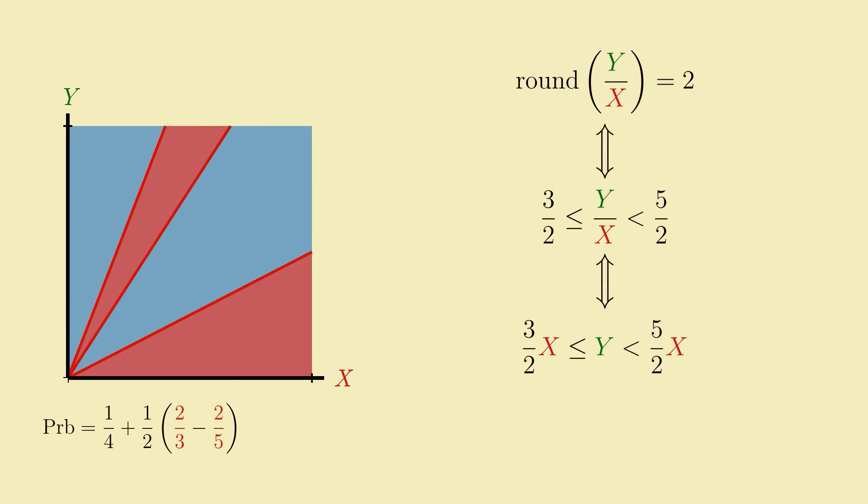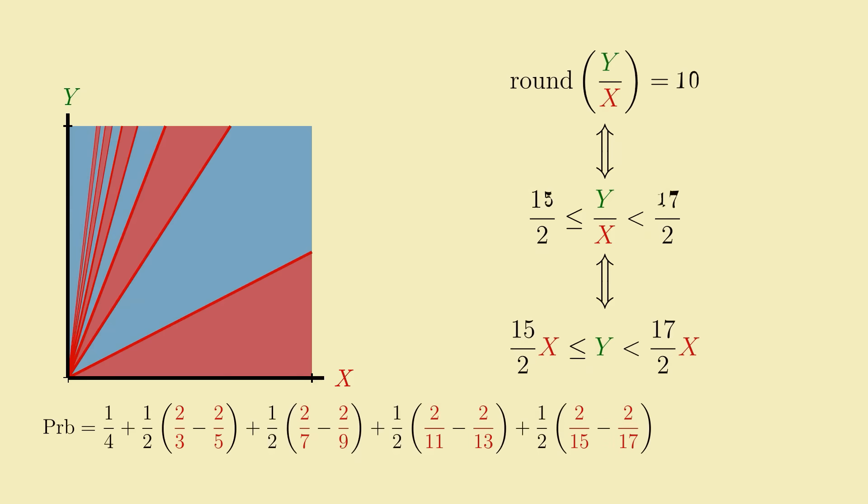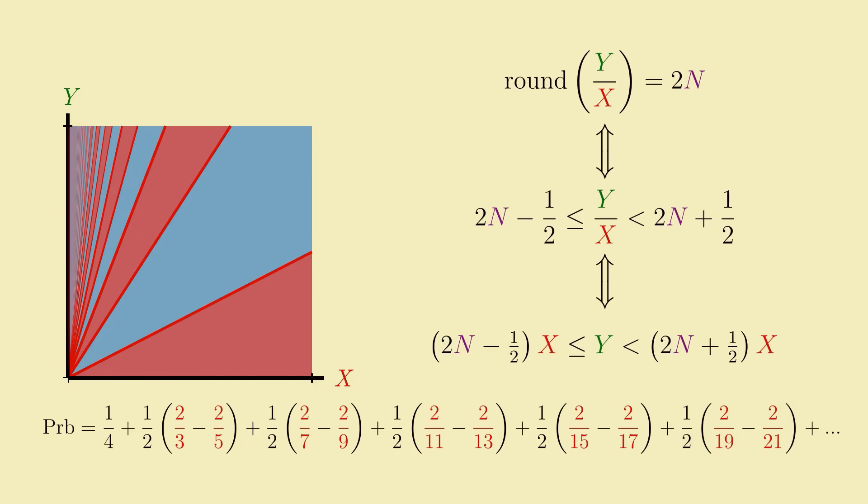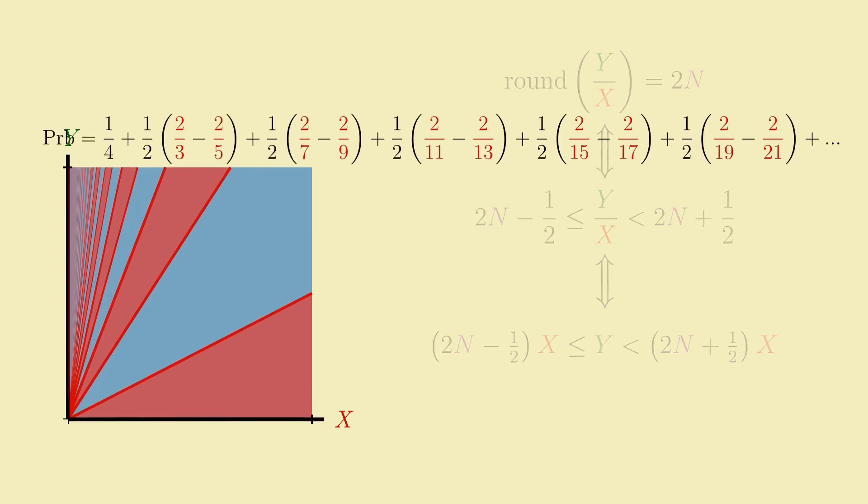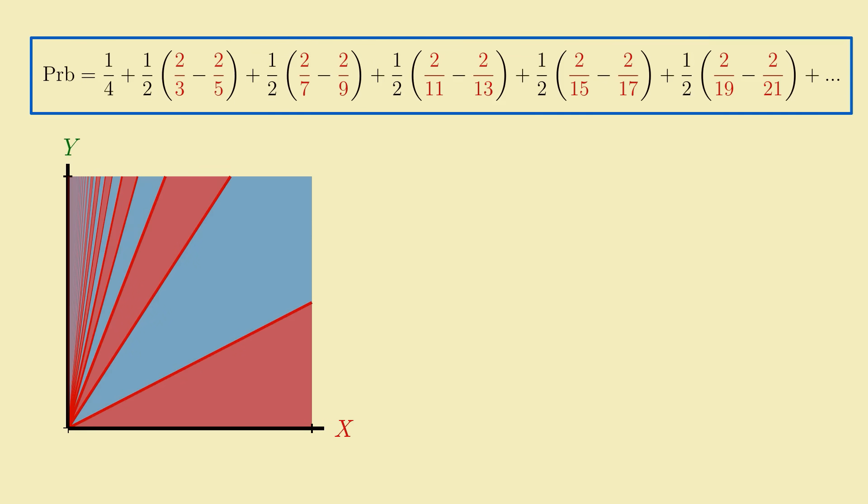From here, we can keep on going, figuring out the region corresponding to rounding to 4. And then 6. And then 8. And so on. Each new number will add a new triangular region whose area we add to the probability. So in the end, we end up with this infinite series representing the probability of getting any even number when rounding y over x.